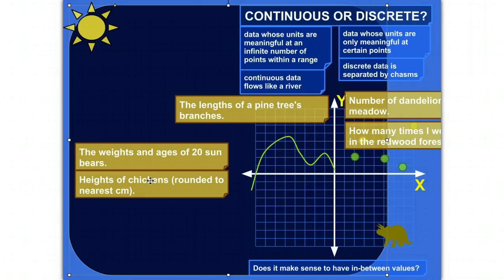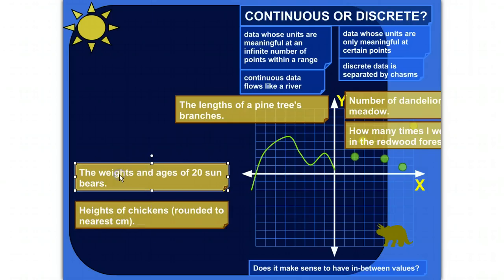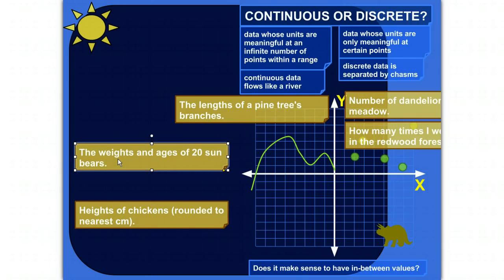What about the weights and ages of 20 sun bears? I like sun bears. There's a little yellow symbol they have on their chest. It's kind of interesting. So what if I grabbed 20 of them and started measuring their weights and their ages? Well, weight, what are possible values for weights? I could have, it could be 100 pounds. It could be 101 pounds. But it could also be 100.67 pounds or 100.7891 pounds.